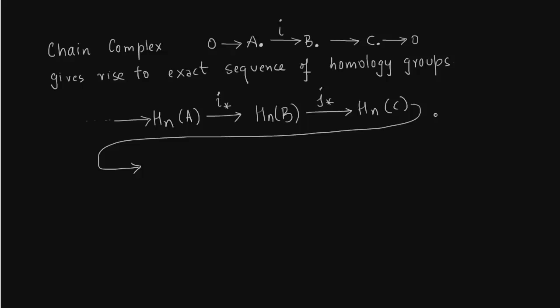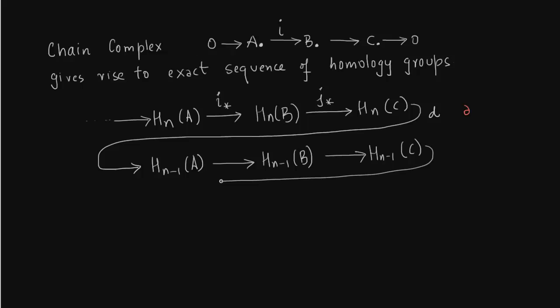So we have this connecting homomorphism which we write as ∂. I think previously we wrote it in red color delta. So this goes to H_{n-1}, we have just reduced index by 1. H_{n-1}C and this will continue on. Again map i* here and map j* here.